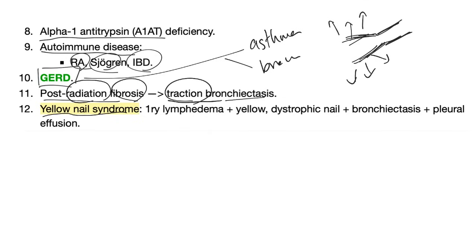There is a very rare disease called yellow nail syndrome. It's a triad of primary lymphedema, yellow dystrophic nails, and pleural effusion. These patients can also have bronchiectasis.